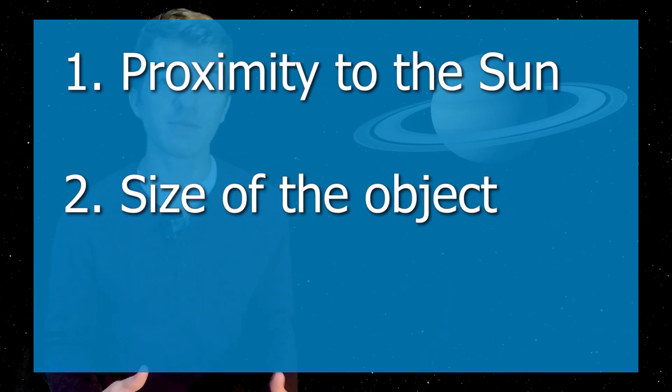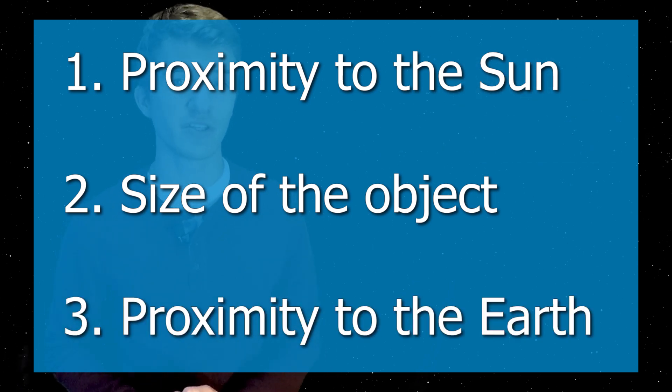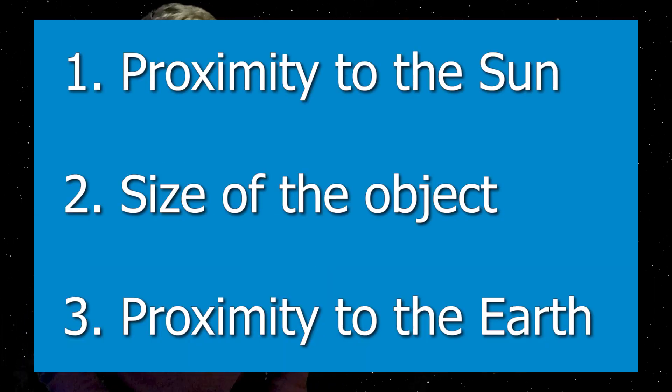And then the third aspect is how close the object is to the Earth. So, for example, the moon is much smaller than the planet Jupiter. However, since it's so close to Earth, it appears much brighter in the night sky. So all these things play into a factor when discussing how bright objects are, or how bright they appear on the surface of Earth.